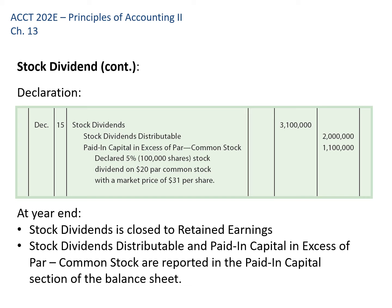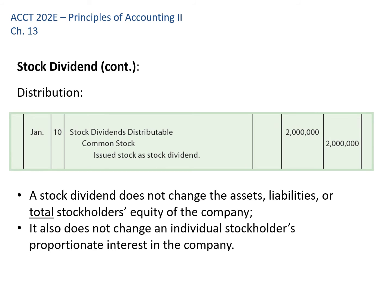We also record Paid-in Capital in Excess of Par for the difference between market value and par value. At year-end, we close out Stock Dividends to retained earnings. Stock Dividends Distributable and Paid-in Capital in Excess are reported in the paid-in capital section of the balance sheet. The following year when we actually issue the shares, we debit Stock Dividends Distributable and credit Common Stock at par value. This doesn't change total stockholders' equity — it just reapportions it from retained earnings to paid-in capital.